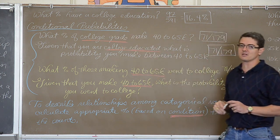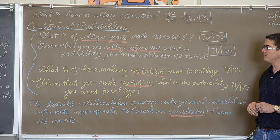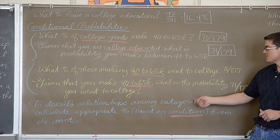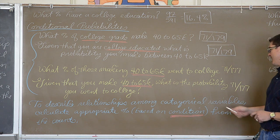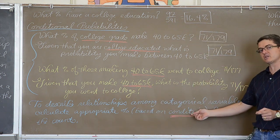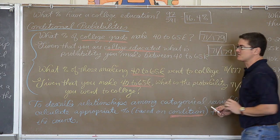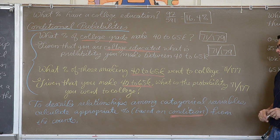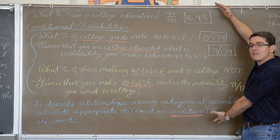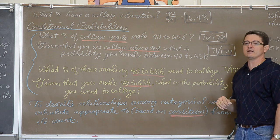If you wanted just the percent of people that made 40 to 65,000 period, with no condition, it would be 177 divided by 591. But these are all examples of conditional probabilities. You must be a college grad to be considered. You must make 40 to 65,000 to be considered in these percents. The margin distributions do not have any condition given. So to describe a relationship among categorical variables, calculate the appropriate percent based on the condition. That is what I am talking about, set up column percent, or in this second example row percent, from the counts. So that is how you set up conditional probabilities, or marginal distribution, non-conditional probabilities, out of a two-way table.